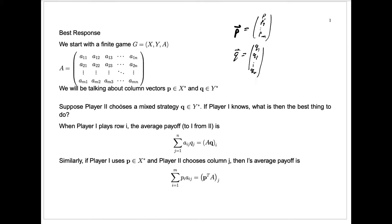Let's start to look at this game from player two's perspective. We're talking about a general finite game here — we're not going to make any assumptions about whether there exist optimal strategies with positive entries. In other words, we don't care if it's an all-strategies-active game or not. Suppose player two chooses some fixed mixed strategy Q and player one knows what that's going to be. Then what's the best thing for player one to do?